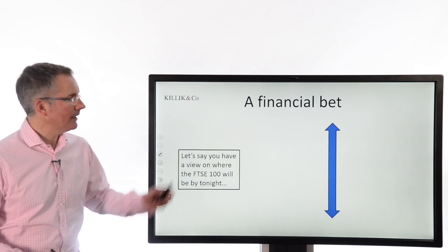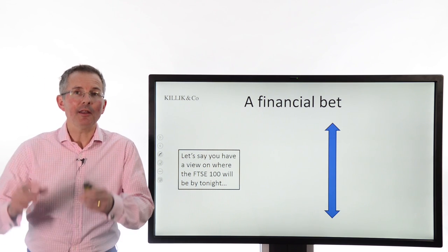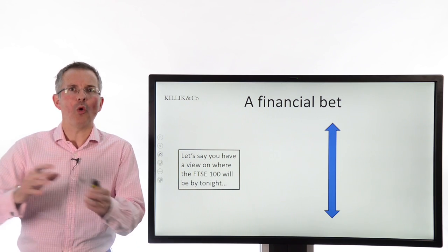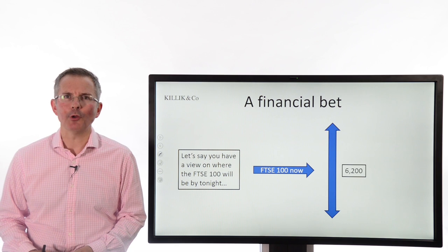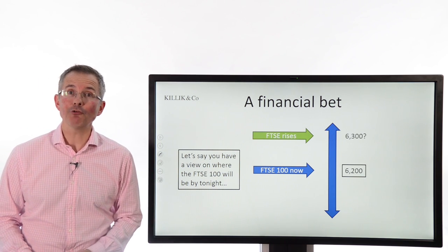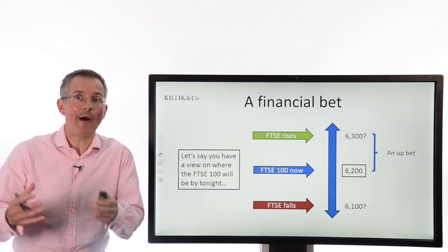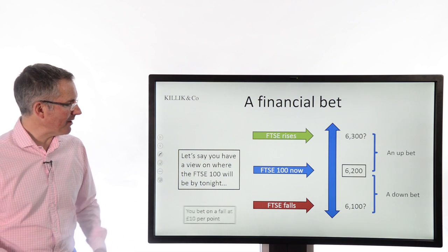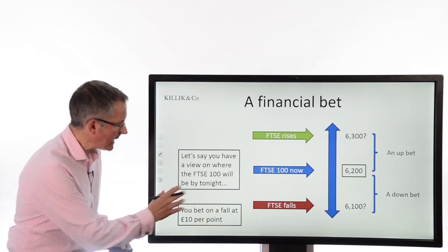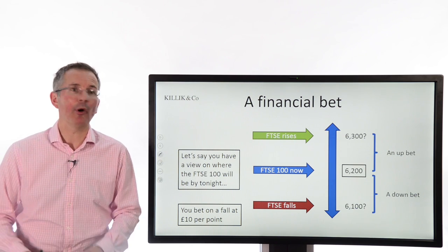Let's get straight into a financial bet. Let's say you've got a view about where the FTSE 100 will be by this evening. Even if you don't know exactly where it will be, you have a view on whether it will go up or down. Currently, the FTSE is at 6,200 points. If the FTSE rises, it might close at, say, 6,300 points. And if it falls, it might close at around 6,100 points. You're prepared to back that view, so you bet on a fall in the FTSE between now and the close of play this evening at £10 per point — that's your stake.